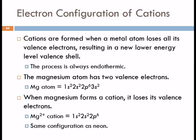For cations, we see that the metal atom loses all of its valence electrons. And this process is always endothermic. We talk about the sodium atom wanting to lose an electron, but you still have to input some energy to pull that off of it. It's not going to fall off by itself.